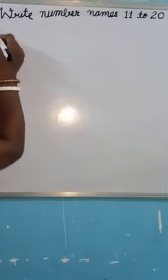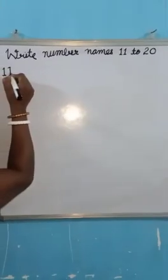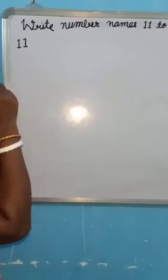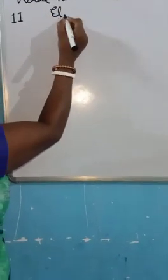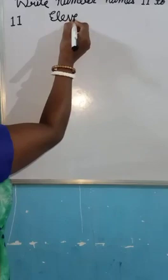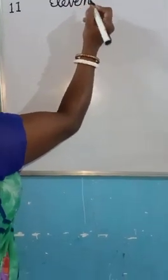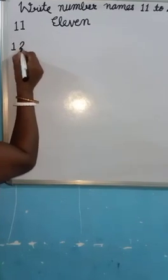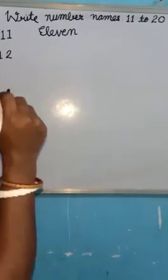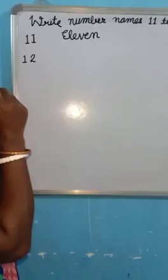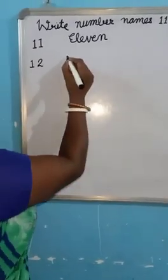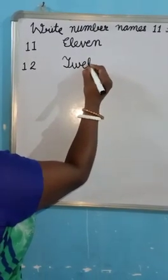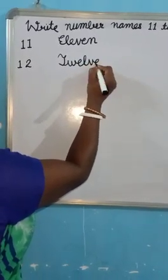So first of all we will write number 1-1, 11 and spelling of 11 is E-L-E-V-E-N, 11, then 1-2, 12. Spelling of 12 is T-W-E-L-V-E, 12.